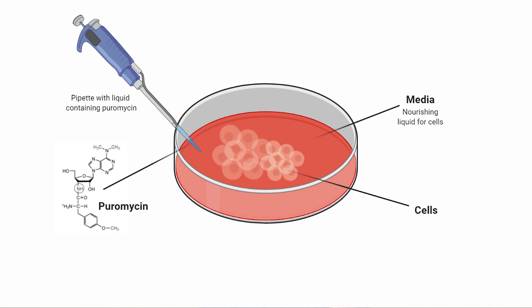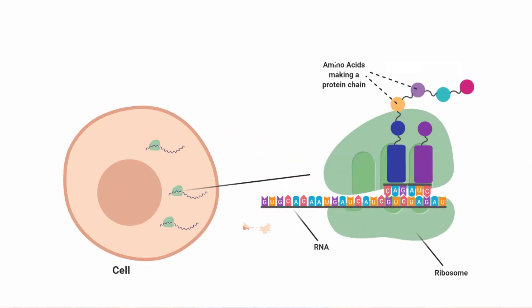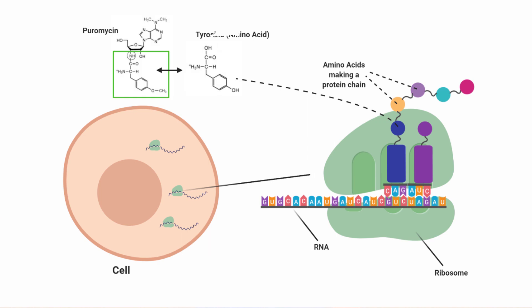The cells will take up that puromycin over that duration of time. Proteins are made up of amino acids that are strung together by ribosomes into a multiple amino acid chain. Now proteins will need different amino acids to create different proteins, obviously. But one amino acid, tyrosine, is chemically and structurally similar to puromycin. So, as you might be able to guess, the cell has a lot of structurally similar puromycin floating around at this point.